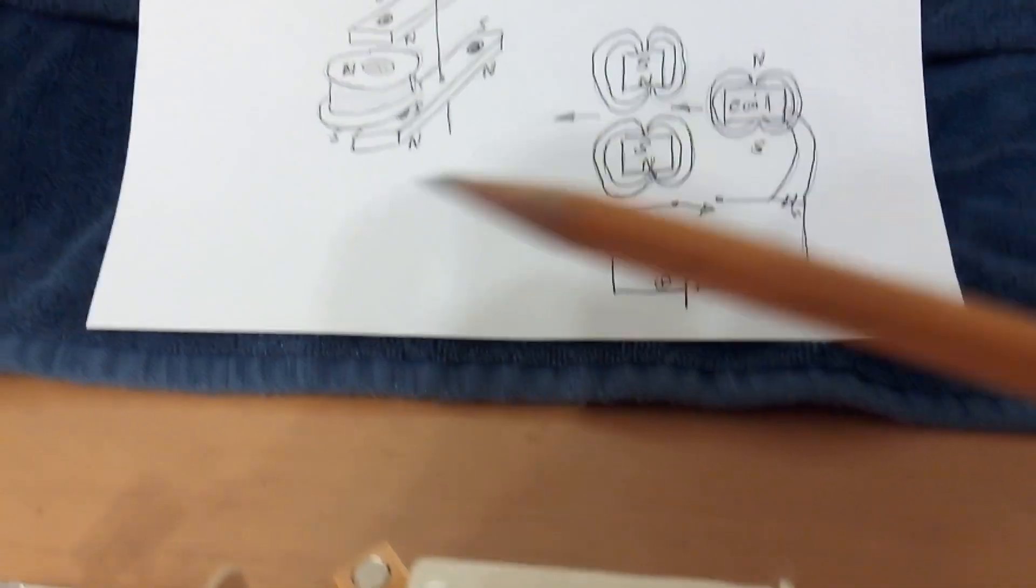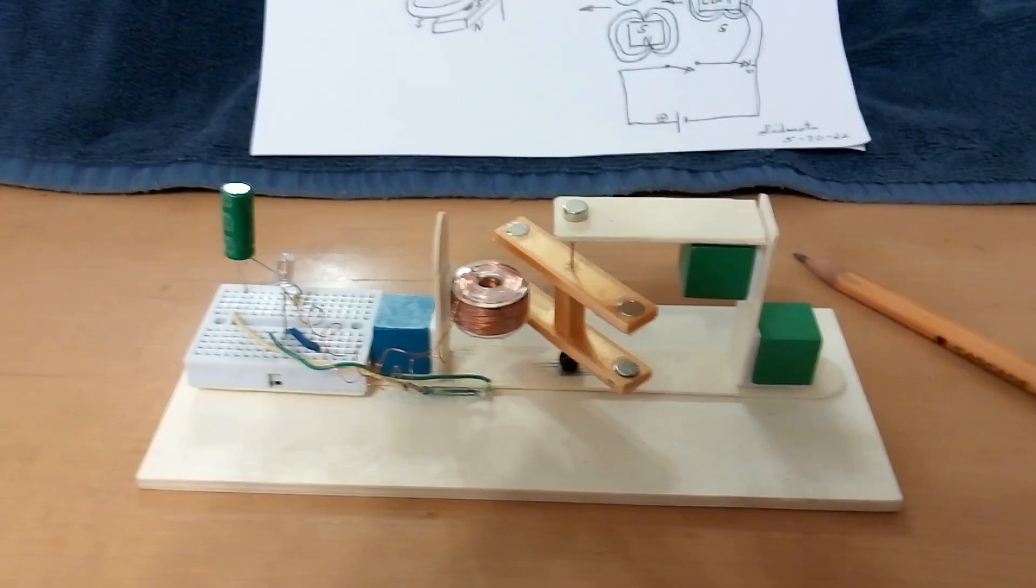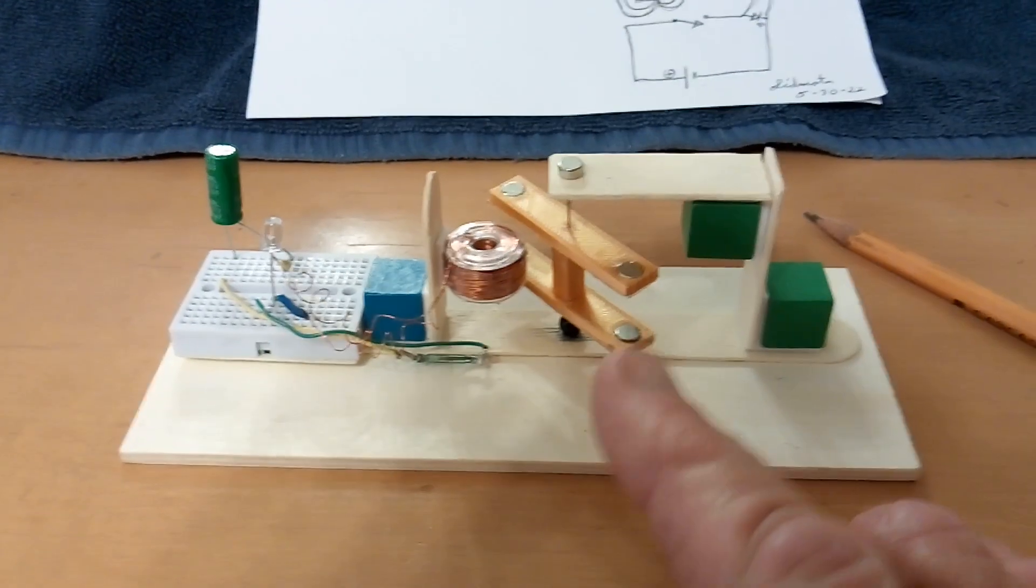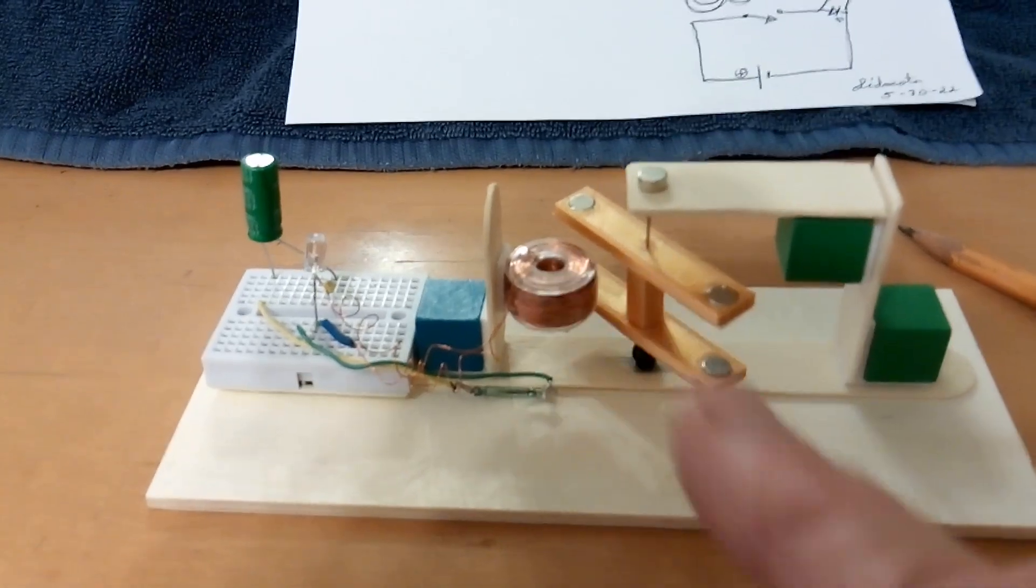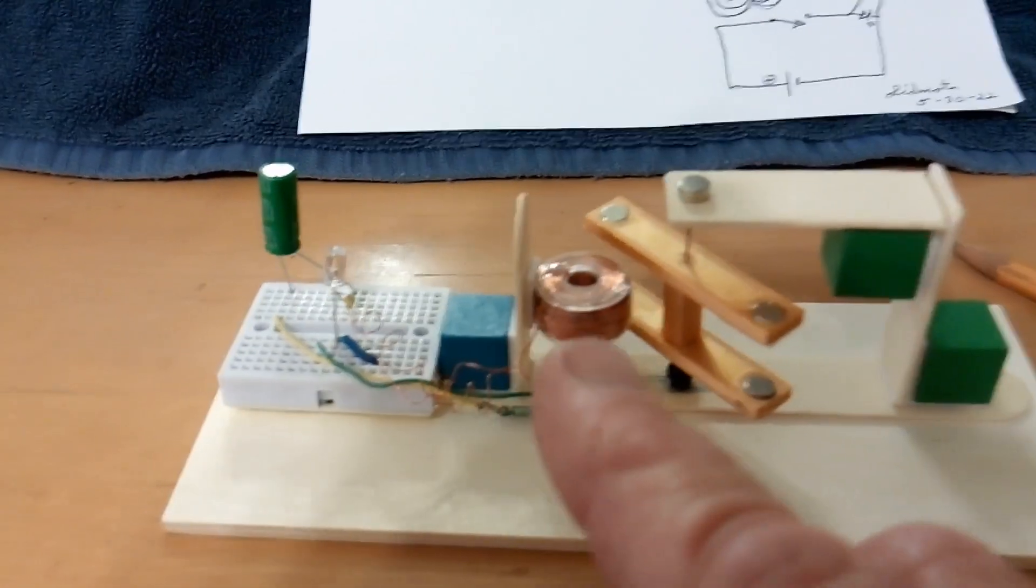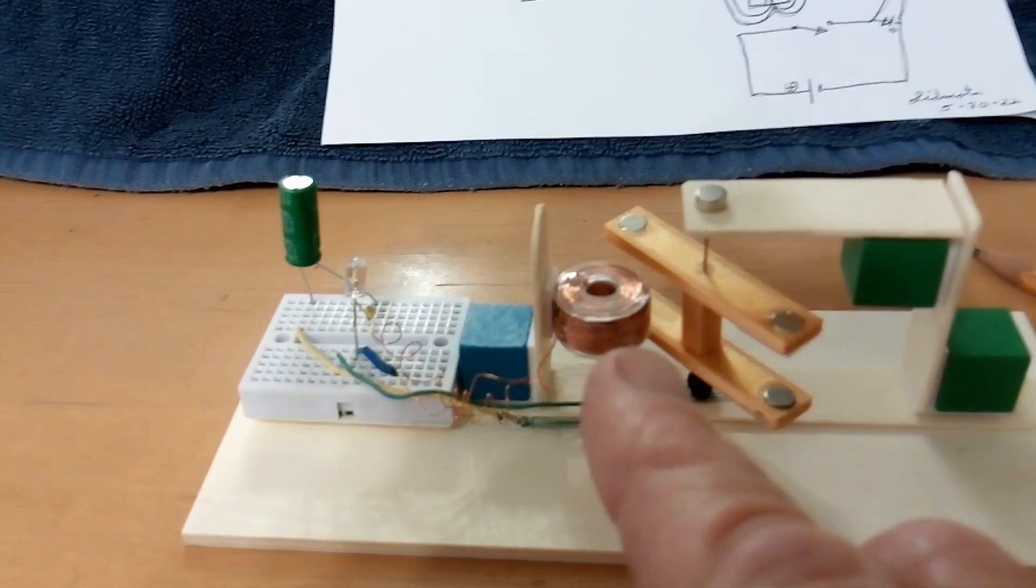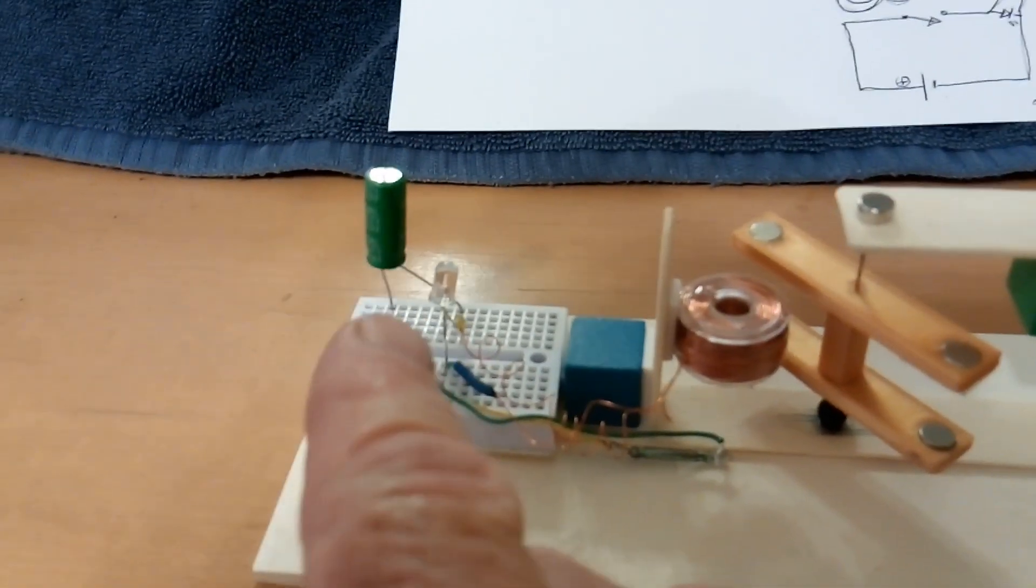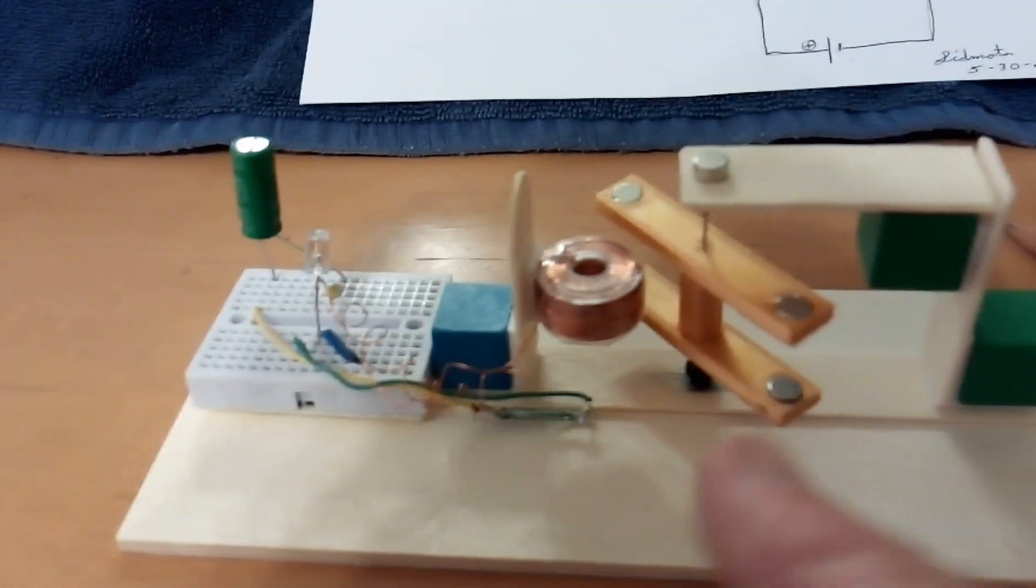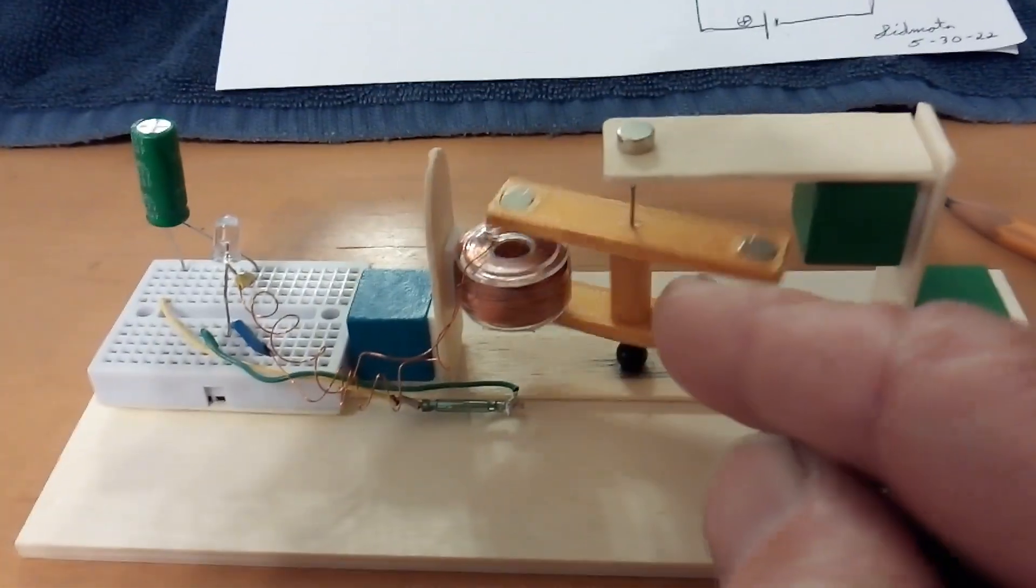But let me show you how this goes. This is just a simple model with the rotor with four magnets, and it's attracting in the middle here. And then this one that turns on is going to push on both sides of that. It's just a simple super capacitor reed switch pulse motor.